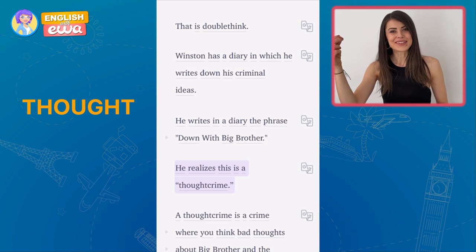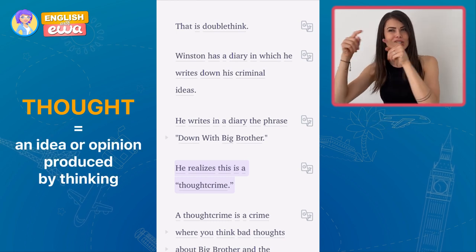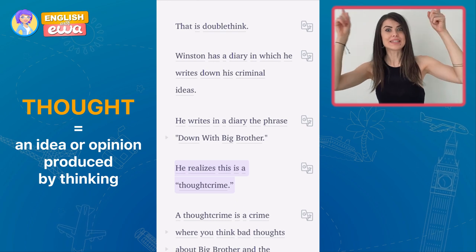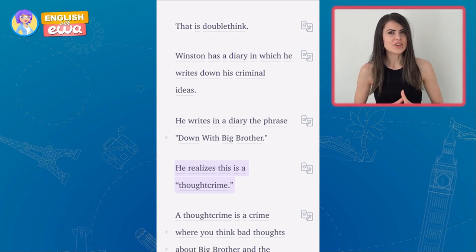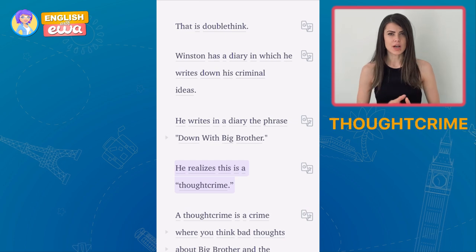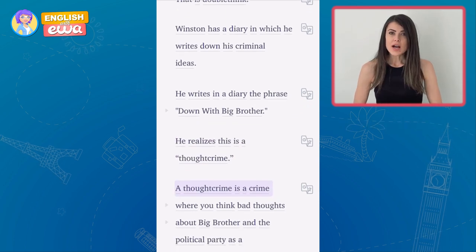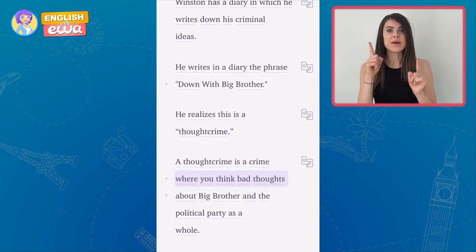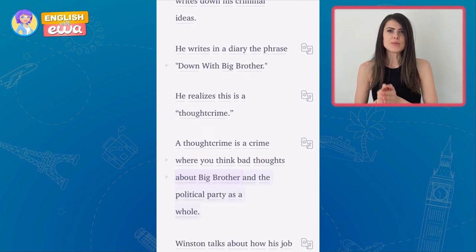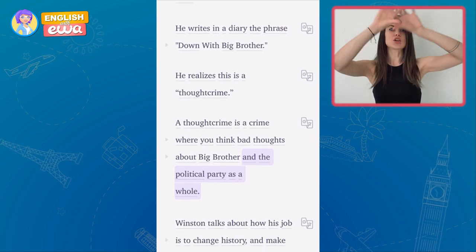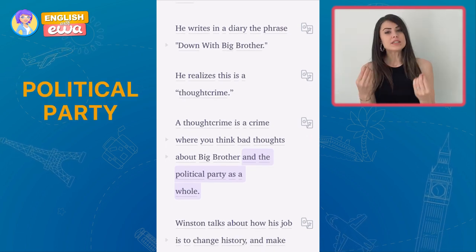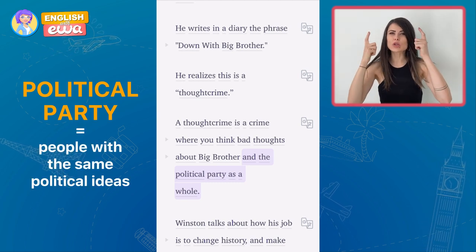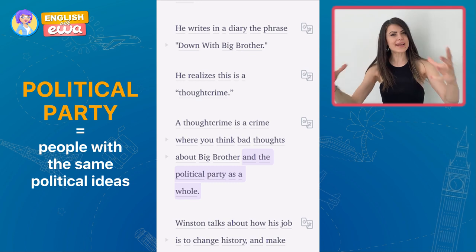Thought is a noun — a thought is, for example, when I think about something. A thought crime is a crime where you think bad thoughts about Big Brother and the political party as a whole. A political party is an organization of different people who have similar political thoughts and come together.